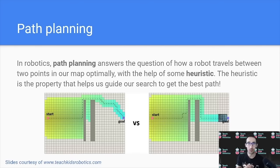Now, in mobile robotics, this field is known as path planning. Path planning answers the question of how does a robot travel between two points in its map optimally. And it does so with the help of something known as a heuristic. The heuristic is the property that helps guide the search to get the best path, and that can encode information such as cost, or time, or a preference. In this example here, getting from the start to the goal point, we can see two different paths, but one has significantly less turns, or the other also decides to stay closer to walls for longer periods of time.